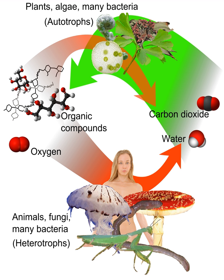Photoautotrophs and lithoautotrophs use a portion of the ATP produced during photosynthesis or the oxidation of inorganic compounds to reduce NADP+ to NADPH to form organic compounds.